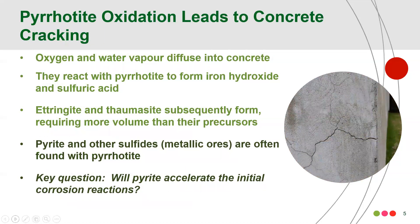I'm not going to go into detail on the chemical processes related to puritite caused damage in concrete — those can be found in some of the references in the written paper. The process kicks off with oxygen and water vapor either diffusing into the concrete or being present in the concrete due to the casting process and the water added at that time. They react with puritite to form iron hydroxide and sulfuric acid. The iron hydroxide is a type of corrosion product. Subsequently, etringite and tomosite form, often years later. The iron hydroxide, etringite, and tomosite all require more volume than their precursors, and as a result, the concrete ends up having to expand and then form cracks such as the ones seen in the image on the slide.